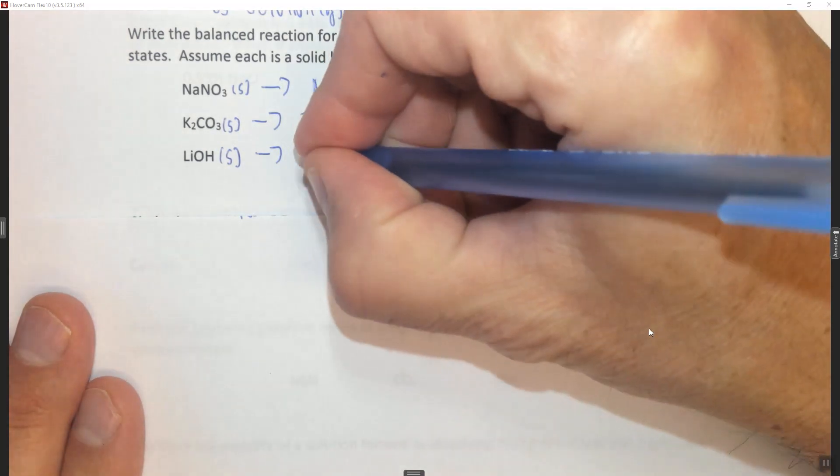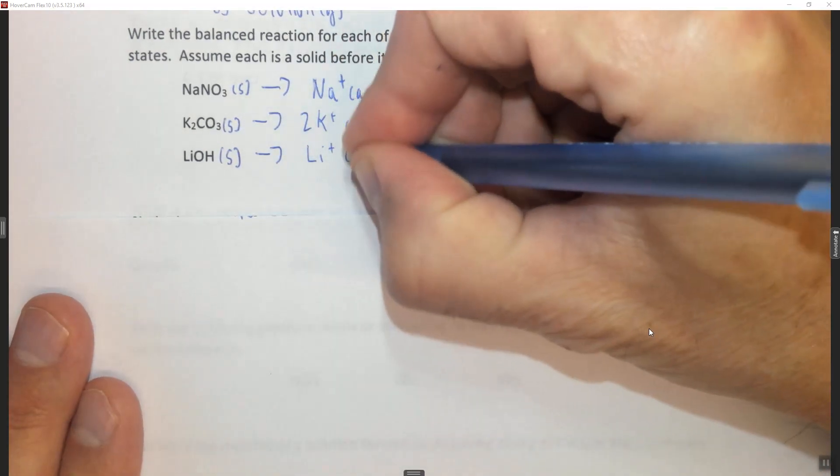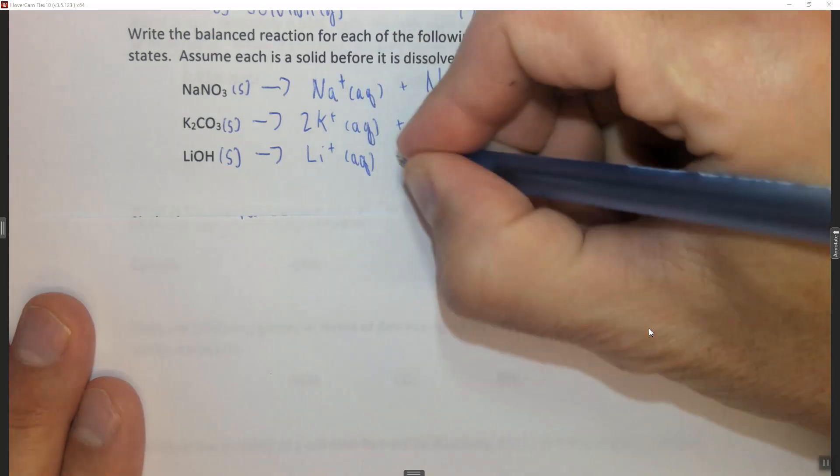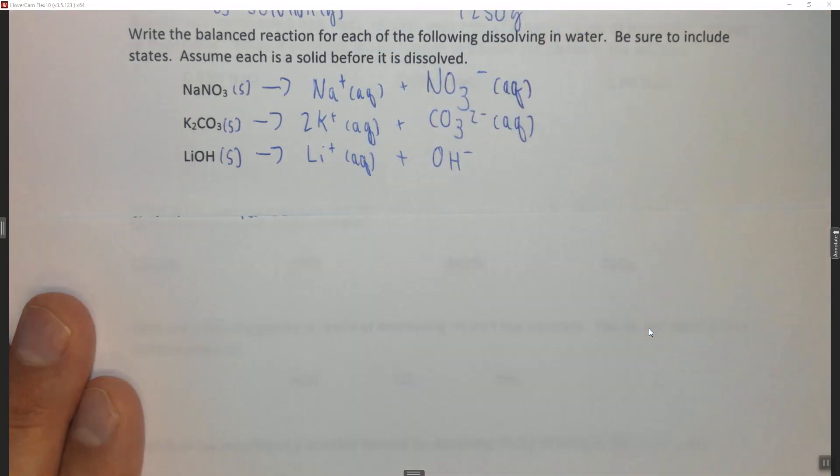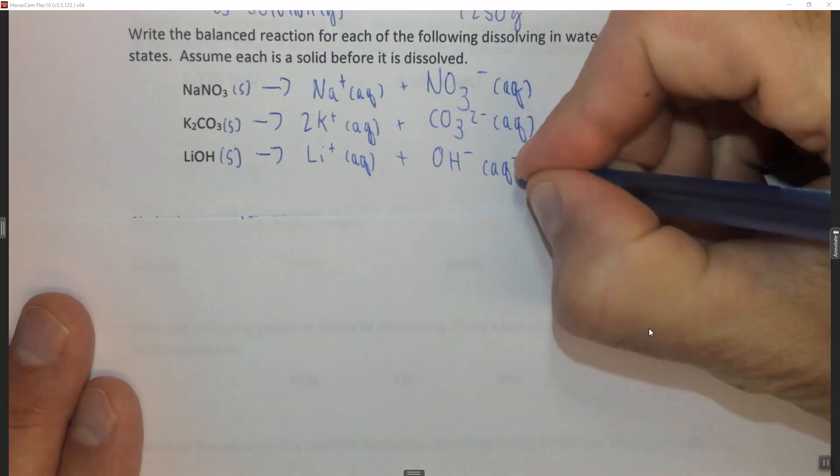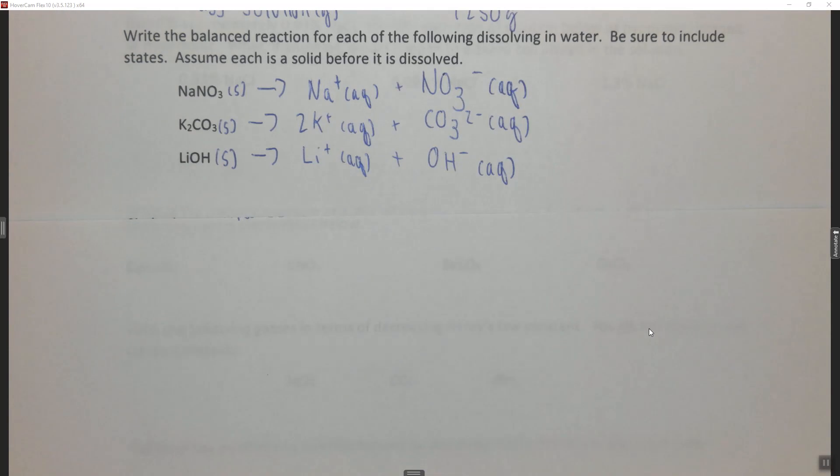Lithium hydroxide, we're going to get Li plus aqueous, and hydroxide is a polyatomic ion, OH minus aqueous, like this. So you do need to be familiar with both the charges on the metals and the polyatomic ions to understand how these things dissociate in water. This is very important in future questions.